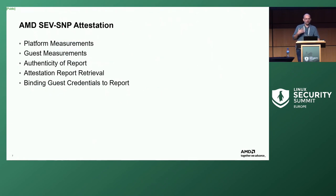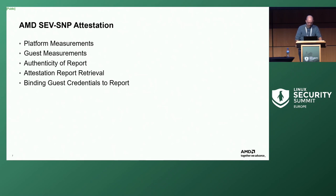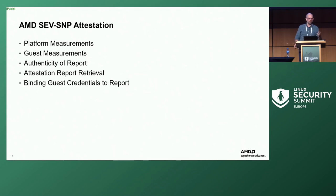To talk about how we do attestation we have to go through several different areas. We want to talk about the platform measurements themselves, how the guest is measured, how the guest owner knows whether the report it receives is authentic, how a guest owner mechanically gets the attestation report, and how you connect the dots between a small kernel bootloader — OVMF, initrd, whichever you decide to measure — to the rest of the system.